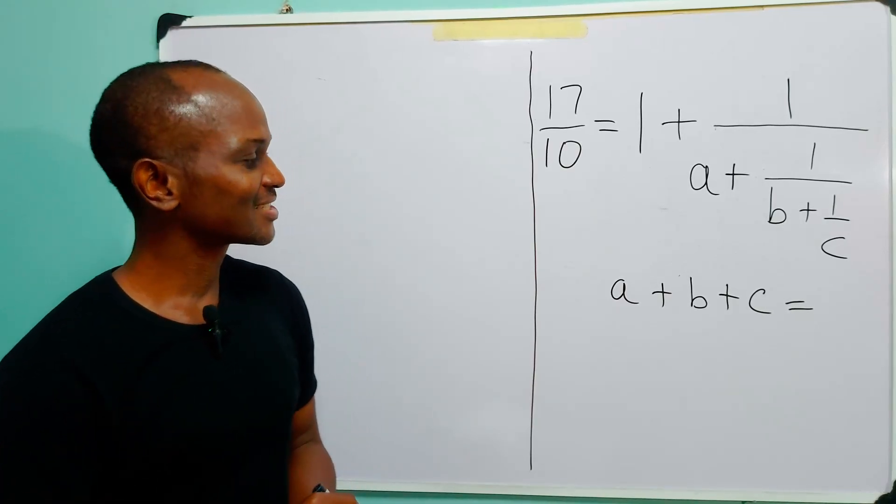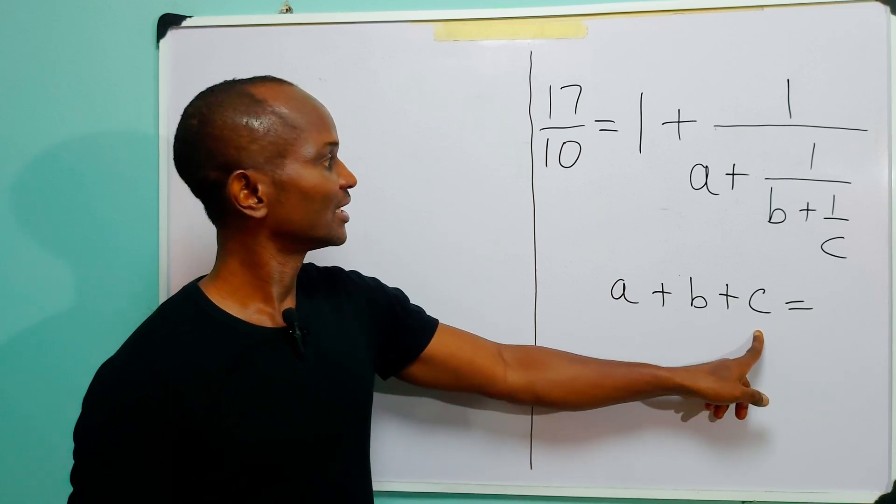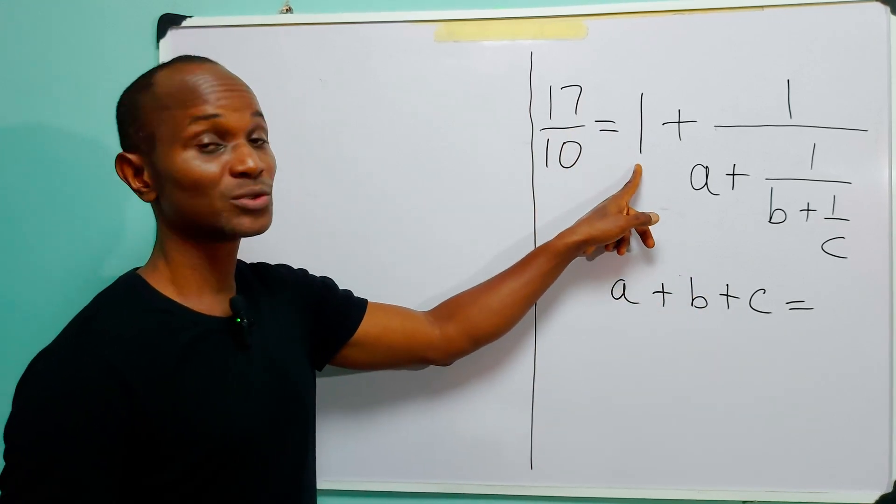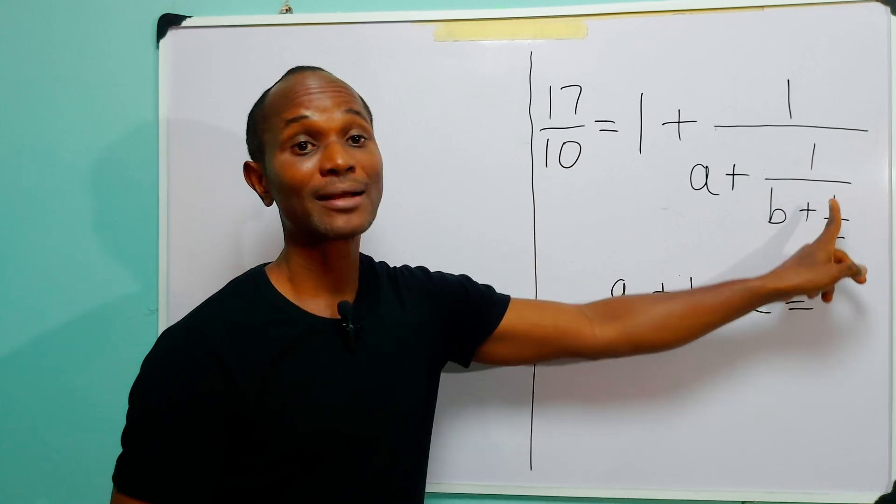Hello and welcome. Our task for today is to find the value of A plus B plus C, given that 17 over 10 is equal to 1 plus 1 over A plus 1 over B plus 1 over C.